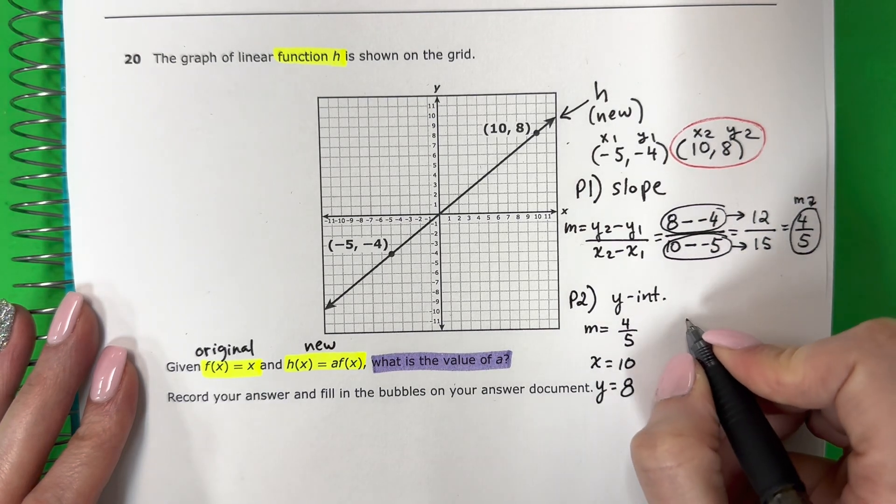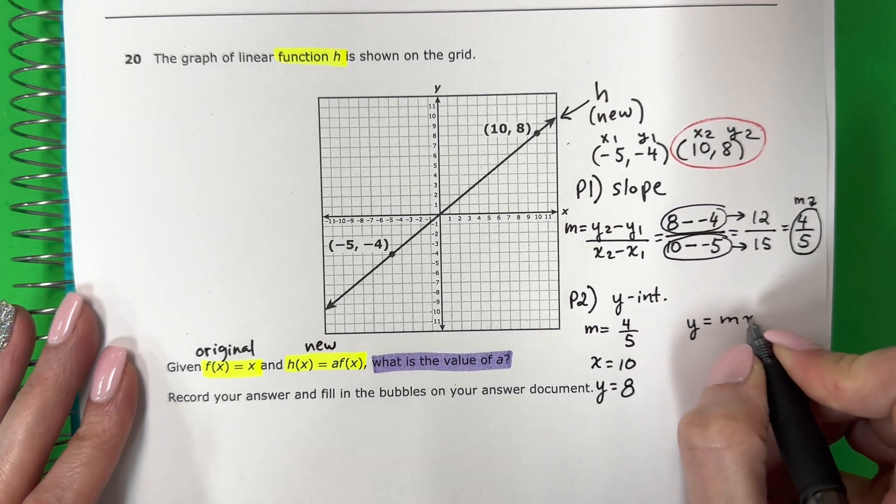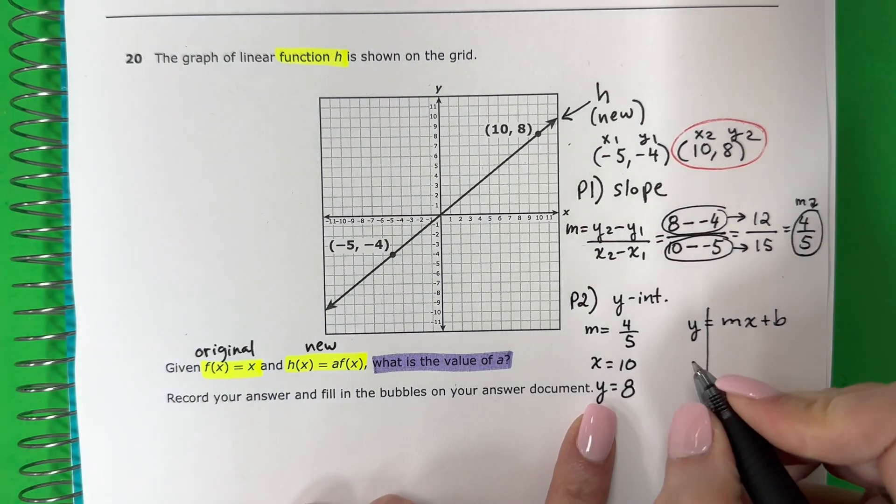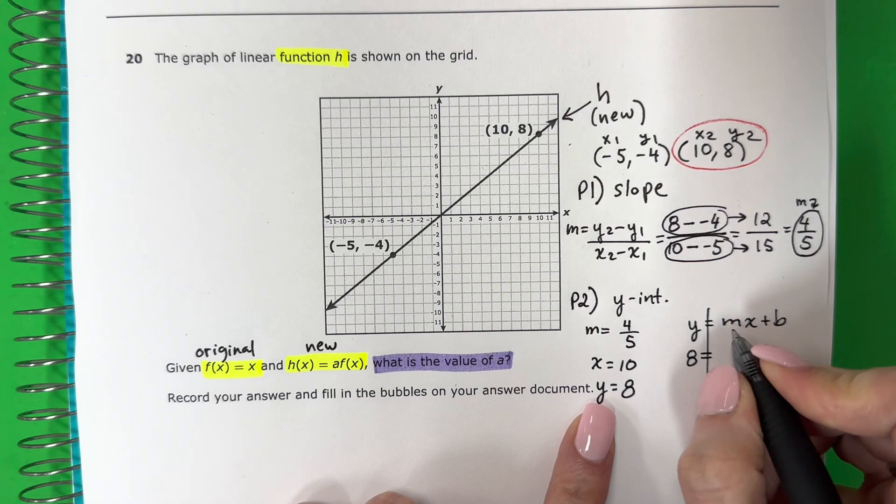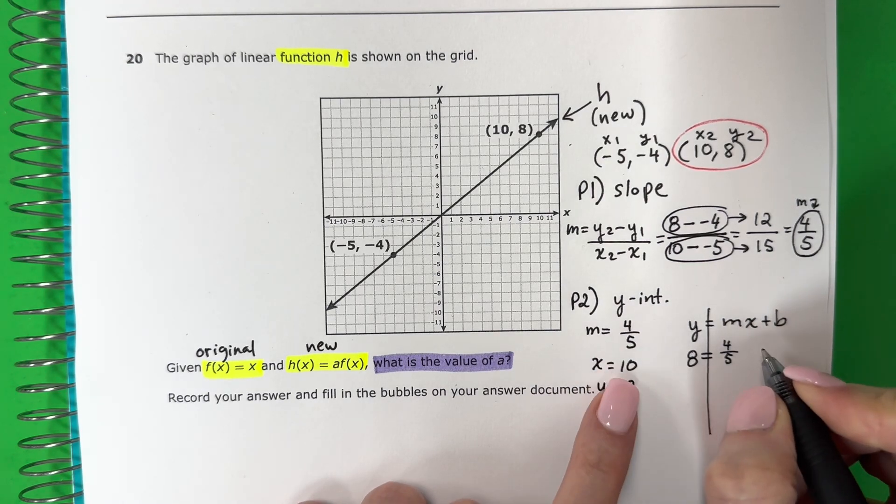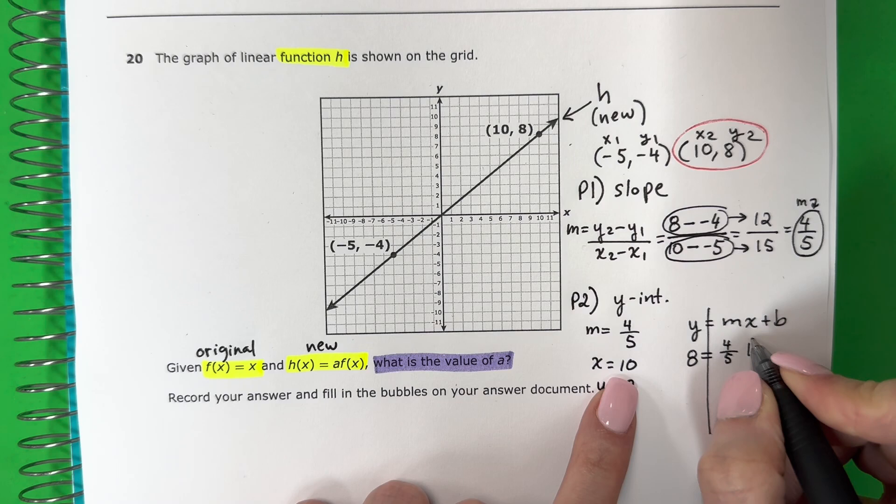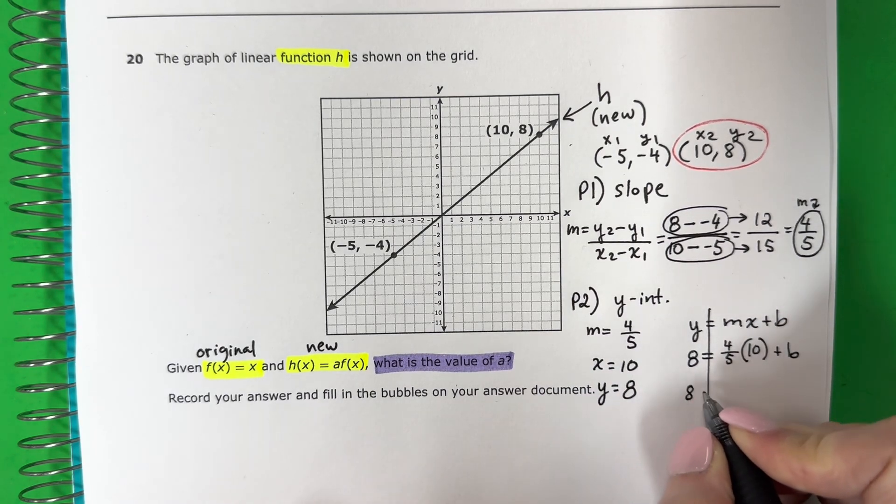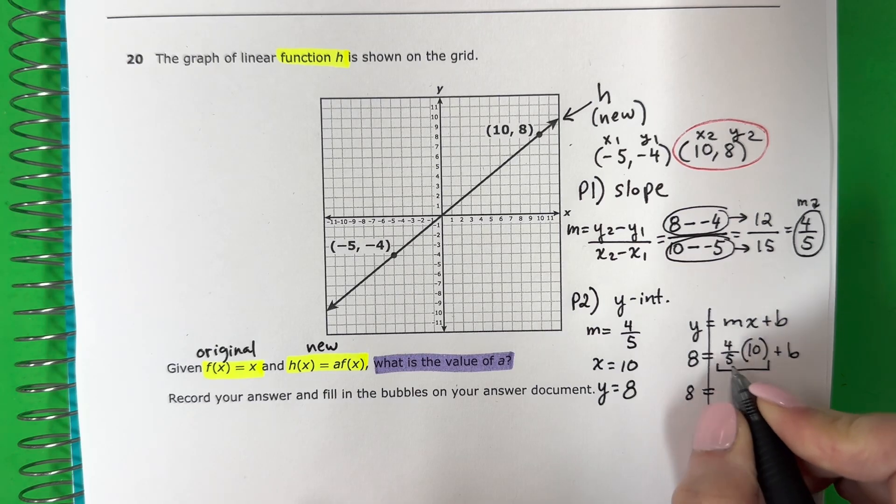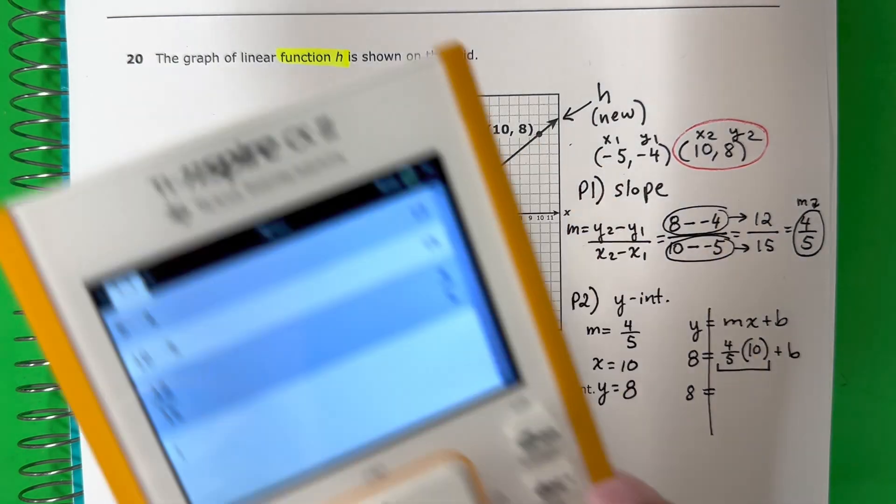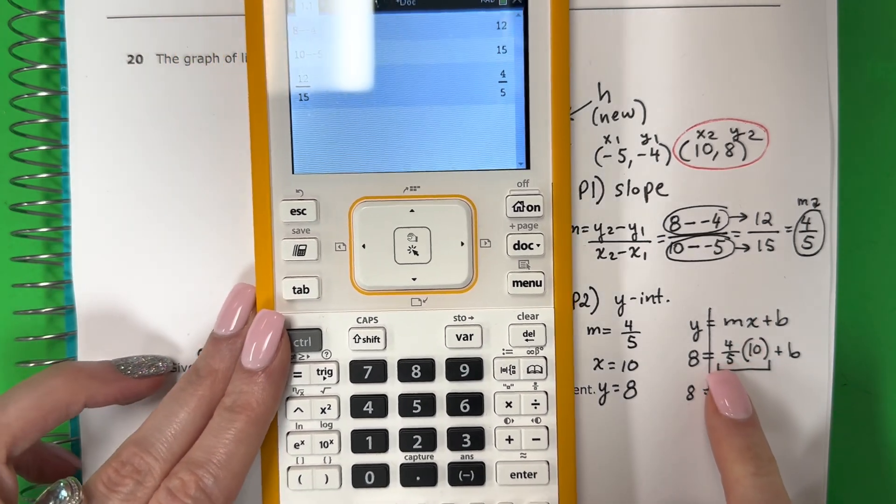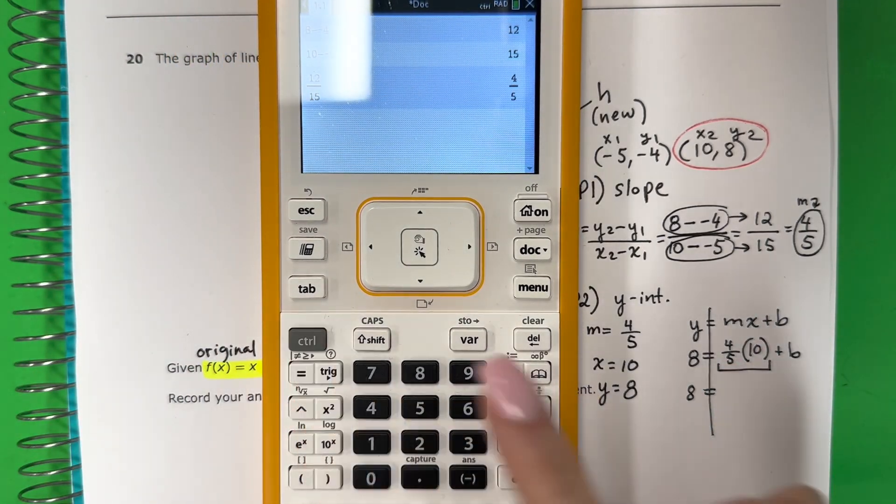Okay, you're going to do y equals mx plus b. Y, 8. Equals m. 4 fifths. X, 10 in parentheses. Plus b. Copy 8. Equals. Let's put that in the calculator. Esta en la calculadora. So, to do the fraction. Para hacer la fracción, you're going to do control, divide.